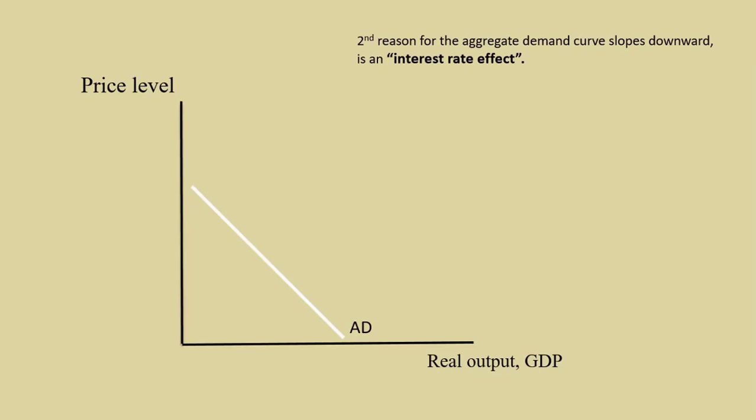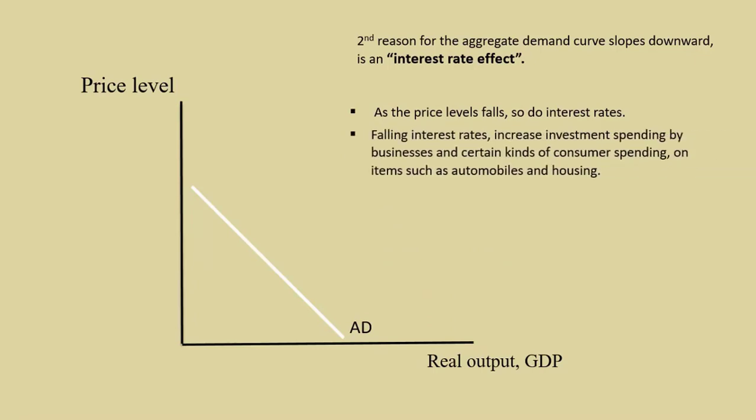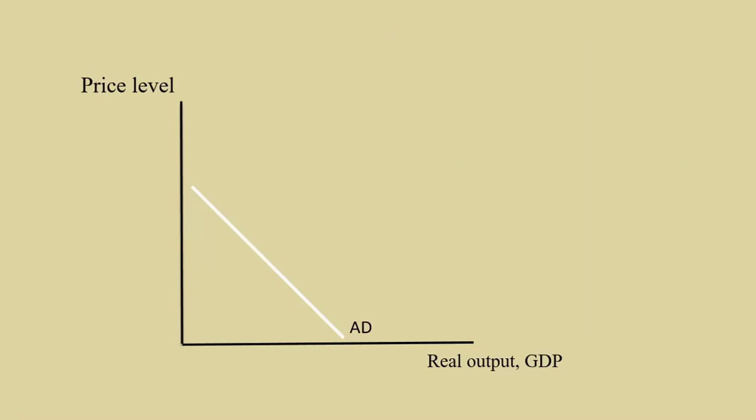A second reason for the aggregate demand curve sloping downward is an interest rate effect. As the price level falls, so do interest rates. Falling interest rates, in turn, increase investment spending by businesses and certain kinds of consumer spending on items such as automobiles and housing.